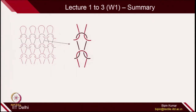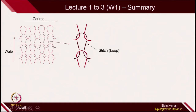In last week, I also gave more emphasis on the intermeshings — how loops are intermeshed inside a basic weft knit structure. You can see the loop is interacting 2 times at the head location and 2 times at the foot location with the old loop. We also came across some of the basic terminologies used in knitting.